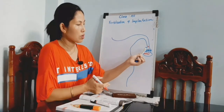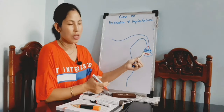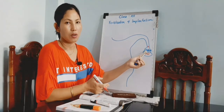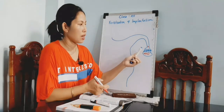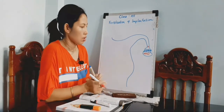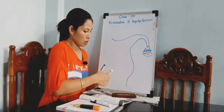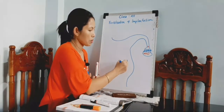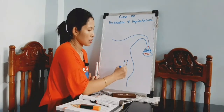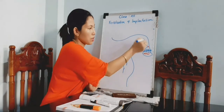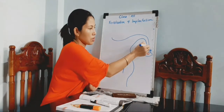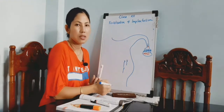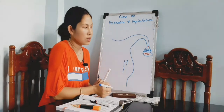During the mid menstrual cycle, an ovum is released every month. After intercourse, millions of sperms are released at a time, and the first sperm that reaches the egg fertilizes it.